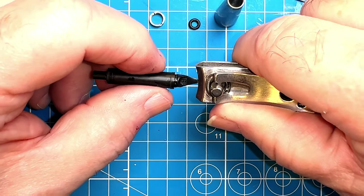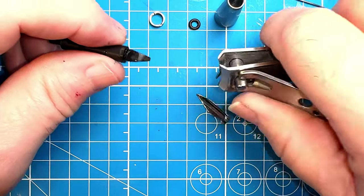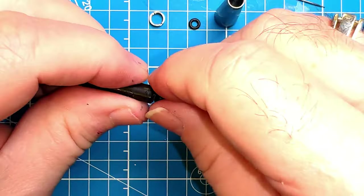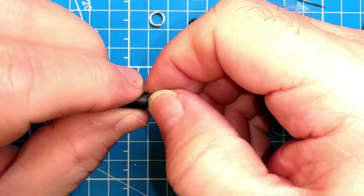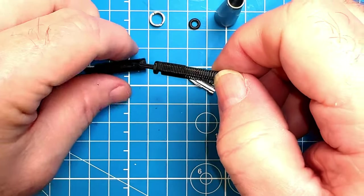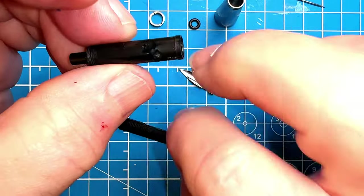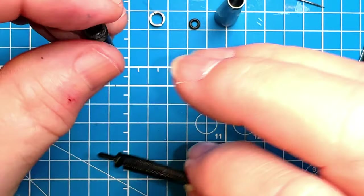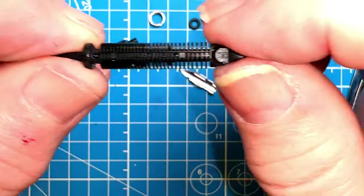Pull that out. Once the nib was out, the feed sort of comes out fairly easily. There we go. So there's that collar with all of its glue, and there is the feed right there, and here is the nib.